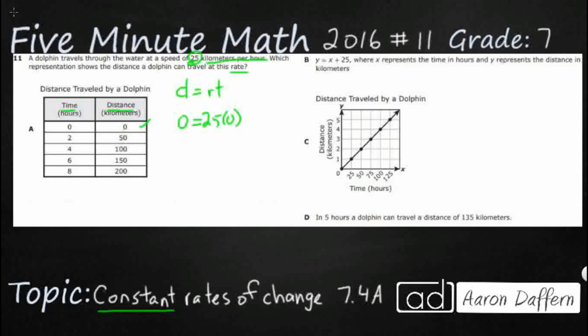Distance of 50 equals the rate of 25 kilometers per hour times 2. Yeah, that looks good. So the first two are looking good. Distance of 100 equals 25 times 4. All right, this could be our answer.